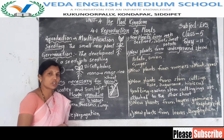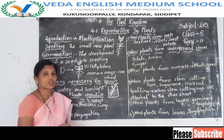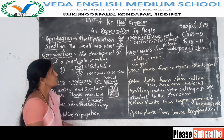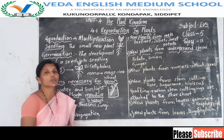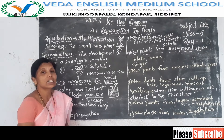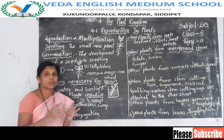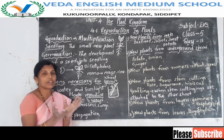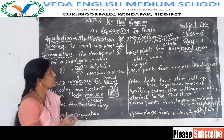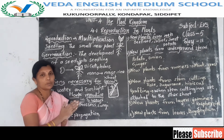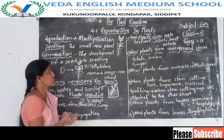Reproduction is also called as multiplication. Multiplication means more number of plants are grown from the seeds, so more number of plants are developed from the seeds. That is why it is also called as multiplication.